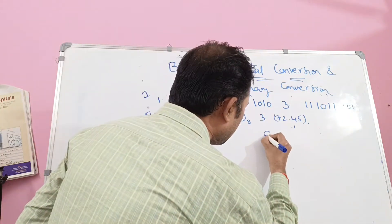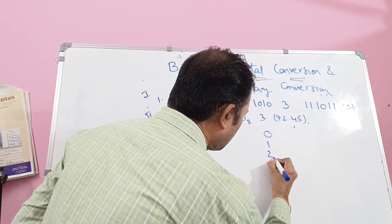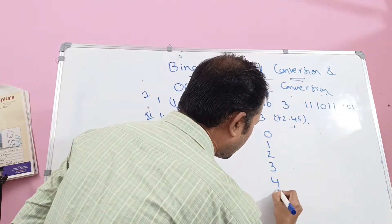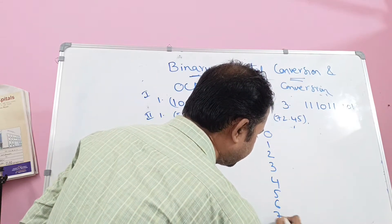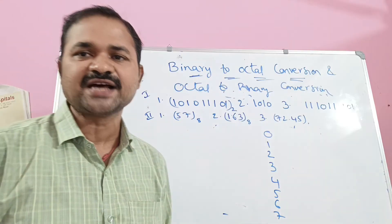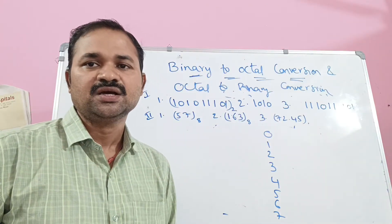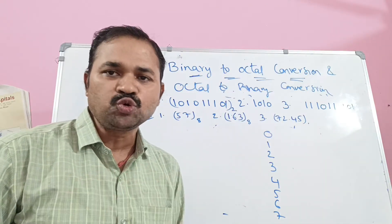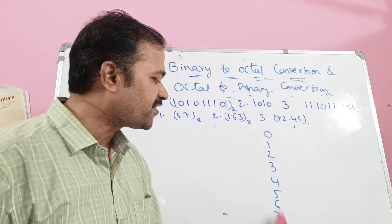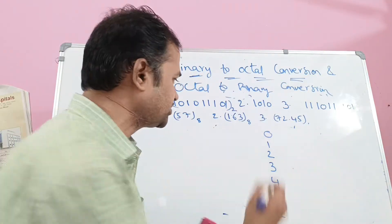So the octal digits are: 0, 1, 2, 3, 4, 5, 6, 7. Because octal means 8, we have to represent the digits from 0 to 7 in binary notation.